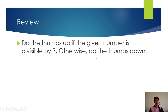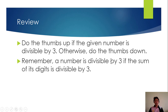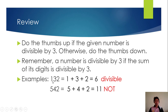We shall start with a review. Do the thumbs up if the given number is divisible by 3, otherwise you do the thumbs down. Remember, a number is divisible by 3 if the sum of its digits is divisible by 3. Example: 132. 1 plus 3 plus 2, the digits, is equal to 6. And 6 is divisible by 3, therefore 132 is divisible by 3. Thumbs up.